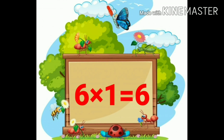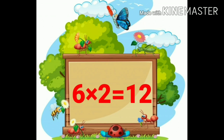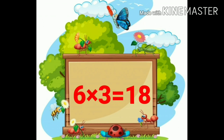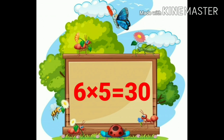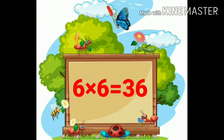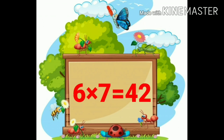Six ones are six. Six twos are twelve. Six threes are eighteen. Six fours are twenty-four. Six fives are thirty. Six sixes are thirty-six. Six sevens are forty-two.